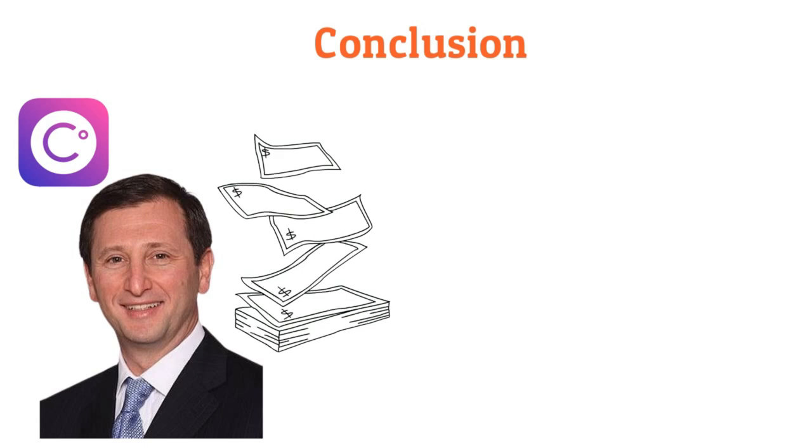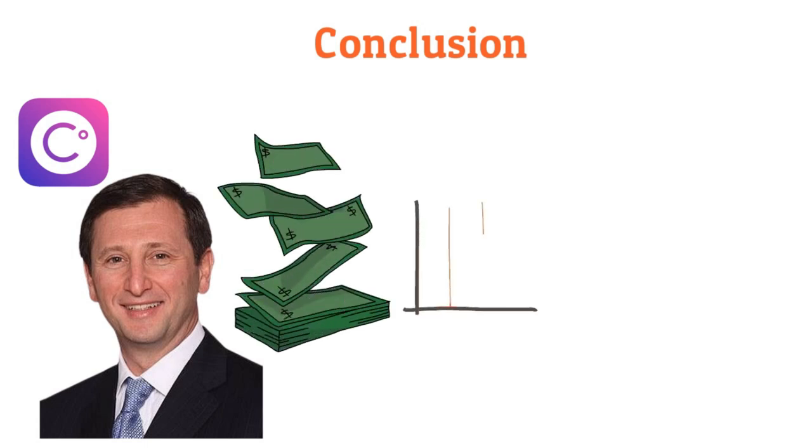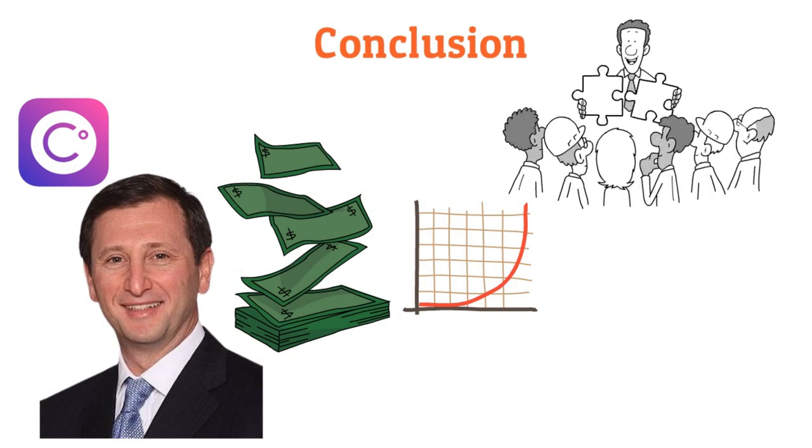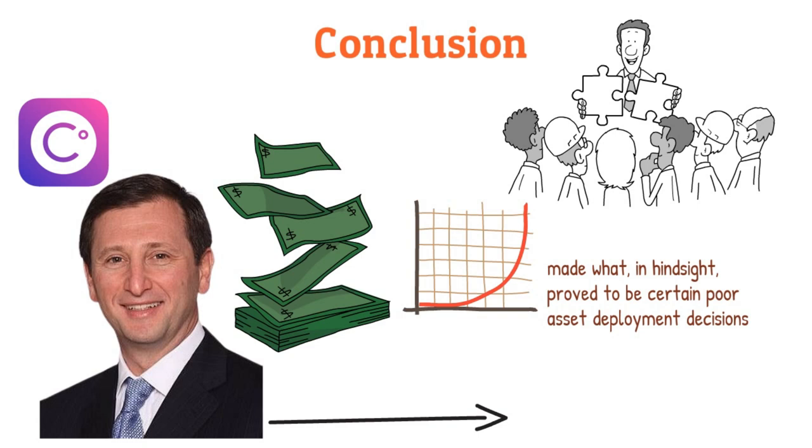Still, those talks made it clear that bankruptcy was necessary. He also added that the number of digital assets on the company's platform grew faster than the company was ready to deploy and, as a result, made what, in hindsight, prove to be certain poor asset deployment decisions, Mashinsky said when detailing the path that led Celsius to bankruptcy.